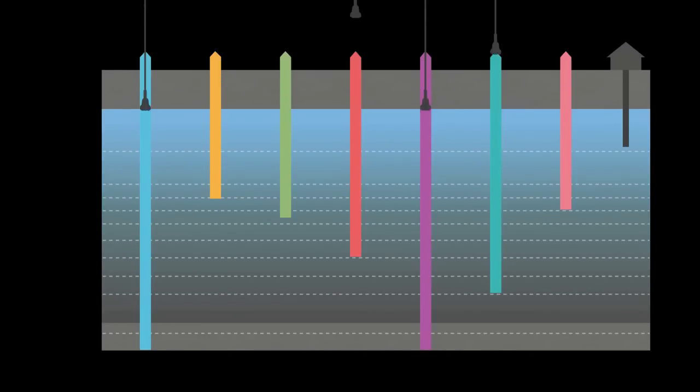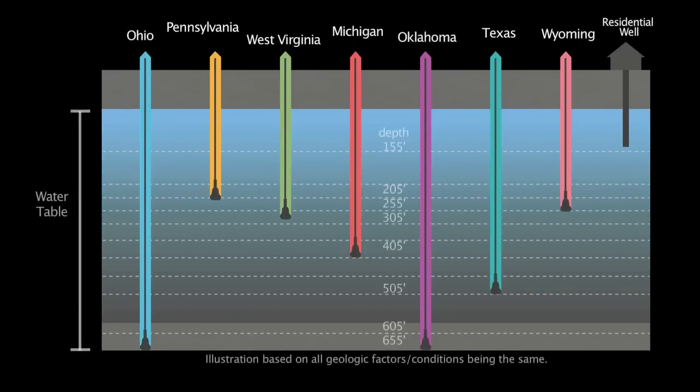Ohio leads the nation in the distance required below the underground source of drinking water that surface casings can be set. If at any point during the well construction process the inspector believes the casings may not adequately protect the groundwater aquifer, Ohio is one of the only states which can require the well operator to immediately plug the well.